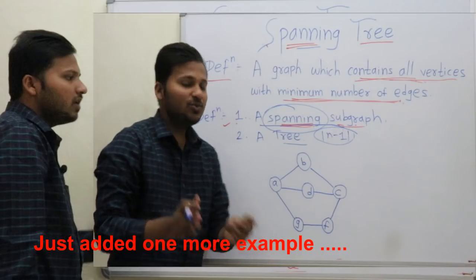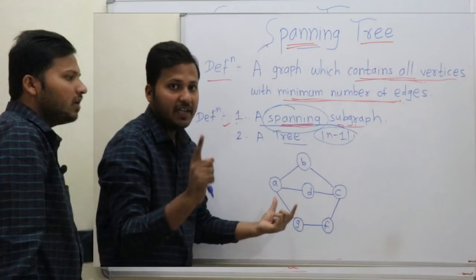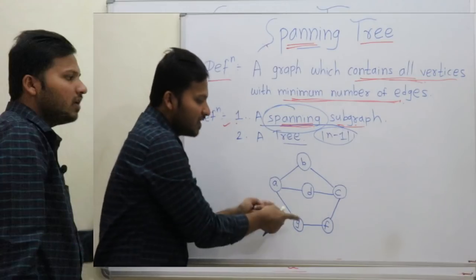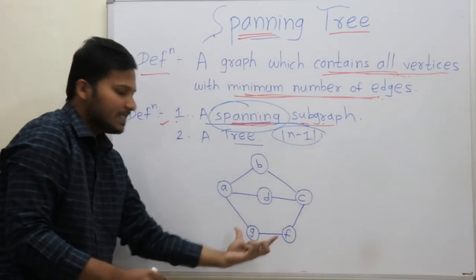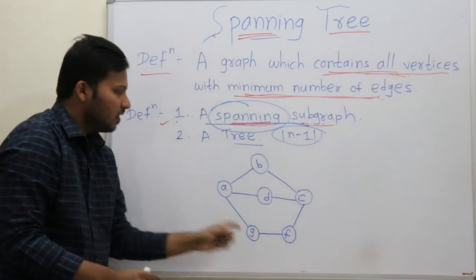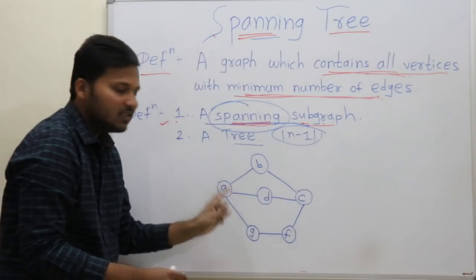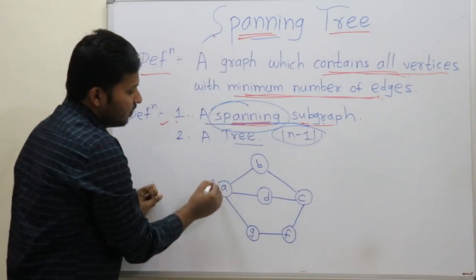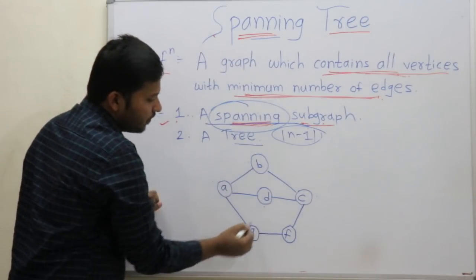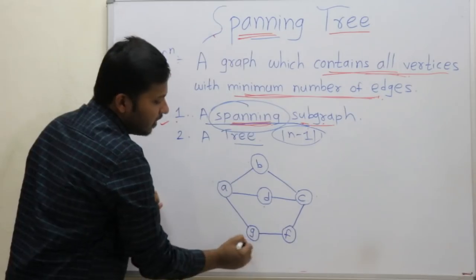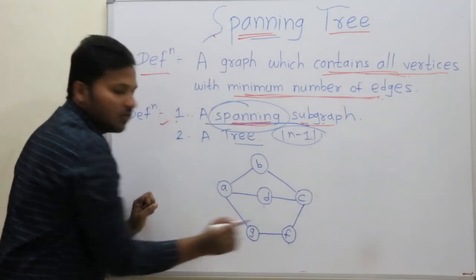Now just for helping you understand better, here is one more example. This is the graph — how many vertices are there? 1, 2, 3, 4, 5 and 6.